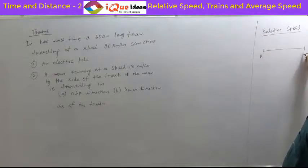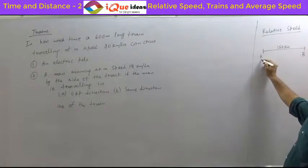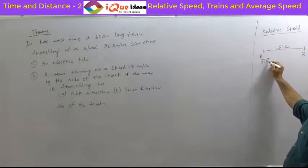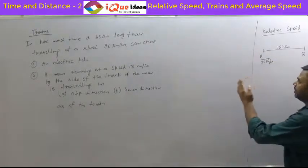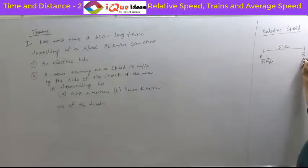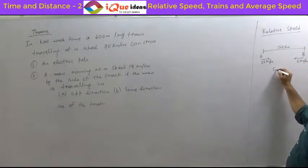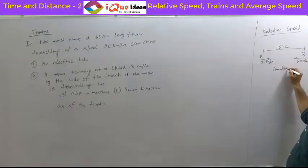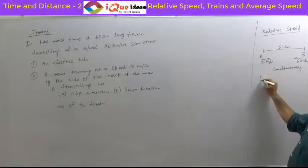Suppose Ahmedabad and Baroda are two places. The distance between them is 150 km. A person starts from A at a speed of 25 km per hour towards B. Similarly, a person starts from B towards A at a speed of 5 km per hour, and they start simultaneously. In how much time will they meet?